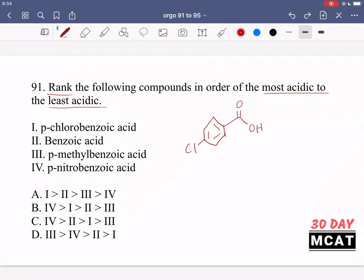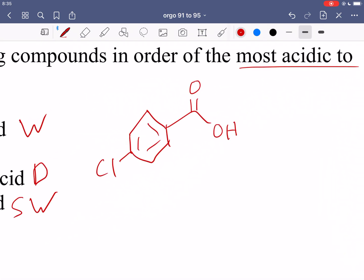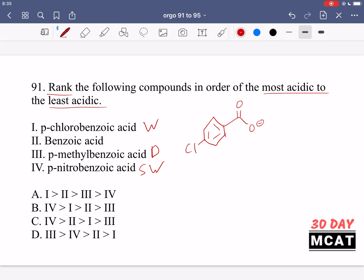What mainly changed is we added something which we can call a withdrawing group because it draws electron density towards itself. In option three we have a donating group - a methyl which will donate electron density. Finally we have nitro which is a strong withdrawing group, stronger than the chloride.